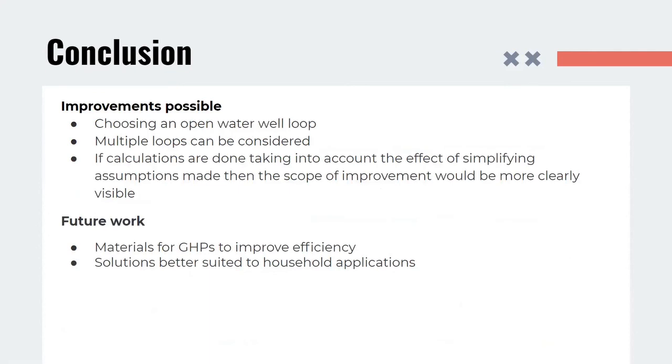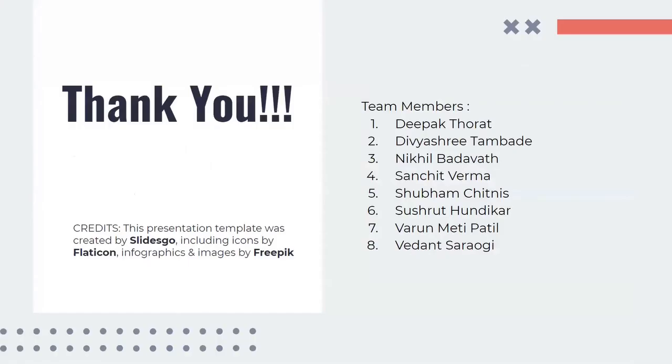Further improvements that could be possible are choosing an open water well loop, using multiple loops for calculations, and if calculations are done taking into account the effect of simplifying assumptions, such as the laminar flow, infinite solid heat capacity, no effect of turns on the pipe, then the scope of improvement would be more clearly visible. Some of the possible avenues for future study are studying materials for geothermal heat pumps to improve efficiency, and developing solutions which are better suited to households. Thank you.